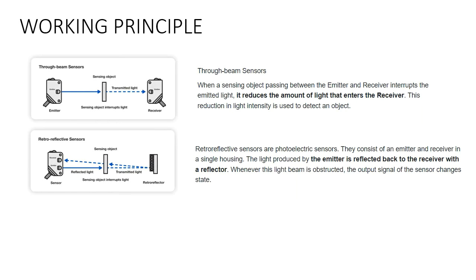The second type is the retro reflective sensor. Here we have a sensor and a retro reflector. The emitter and receiver are in the same module — unlike the through beam type where they are separate. We also have a separate reflector piece. When there is no part in between, the light is transmitted and the reflector reflects it back, which is then received by the receiver in the sensor.